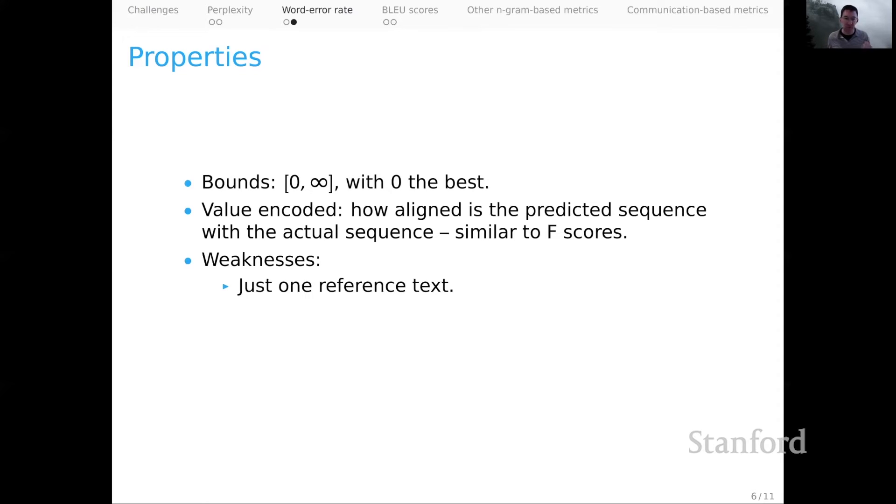The weaknesses? Well, first, we have just one reference text here. I called out before that there are often many good ways to say something, whereas here we can make only a single comparison. And it's also, maybe this is more fundamental, word error rate is a very syntactic notion. Just consider comparing text like 'it was good,' 'it was not good,' and 'it was great.' They're likely to have the identical word error rates, even though the first two differ dramatically in their meanings, and the first and the third are actually rather similar in their meanings. That semantic notion of similarity is unlikely to be reflected in the word error rate.